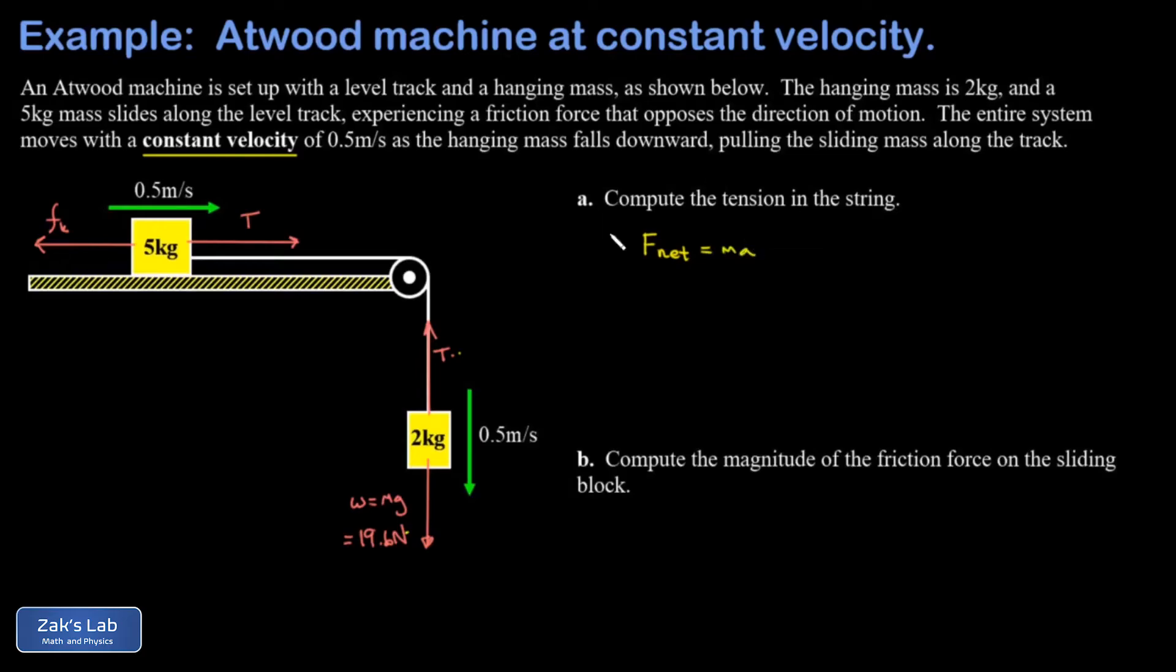To fill in some details: for the two kilogram block, F net equals ma. But the velocity is constant, so the acceleration must vanish. This means F net is zero, and this means my tension must have the same magnitude as the weight, so 19.6 newtons.